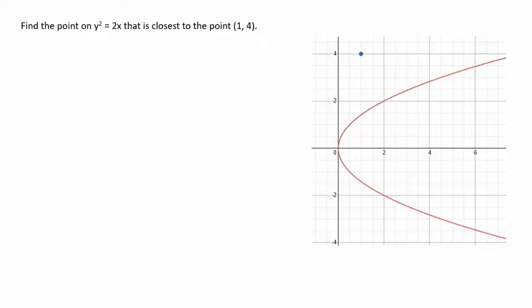Here we have the graph of y squared equals 2x, and we have the point (1, 4). We want to move or walk from the point (1, 4) to this path. We want to take the shortest distance. This is going to be like a perpendicular line to the tangent line here.